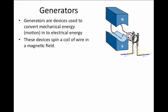This occurs by taking a magnet, like the one shown in this picture, where there's a north pole and a south pole, and inside of that magnet, causing a coil of wire to spin. In the magnet, there's a magnetic field that always points from the north pole to the south pole. When the loop of wire spins inside of this magnet, the area vector that represents the surface area of that loop of wire and the direction it's pointing starts to rotate around.